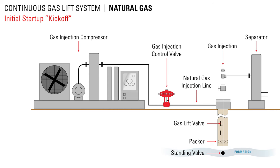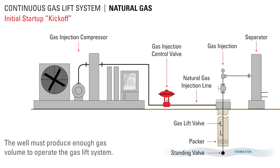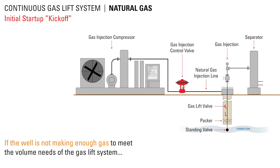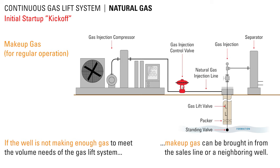Now let's look at how a standard continuous gas lift system works and identify each component. After a neutral startup or kickoff, the well must produce enough gas volume to operate the gas lift system. In many gas lift wells, supplementary gas is taken from a nearby well or pipeline to kick off the artificial lift process. If the well is not making enough gas to meet the volume needs of the gas lift system, makeup gas can be brought in from a sales line or a neighboring well.